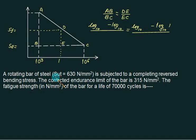A rotating bar of steel with Sut equal to 630 N/mm² is subjected to completely reversed bending stress. The corrected endurance limit is 315 N/mm². You want to find the fatigue strength Sf for 70,000 cycles, so N is 70×10³. Take this value equal to 0.9 of Sut, so 0.9 times 630 gives 567 N/mm².